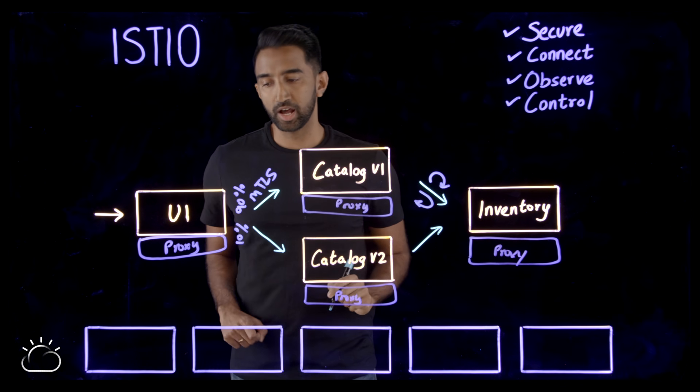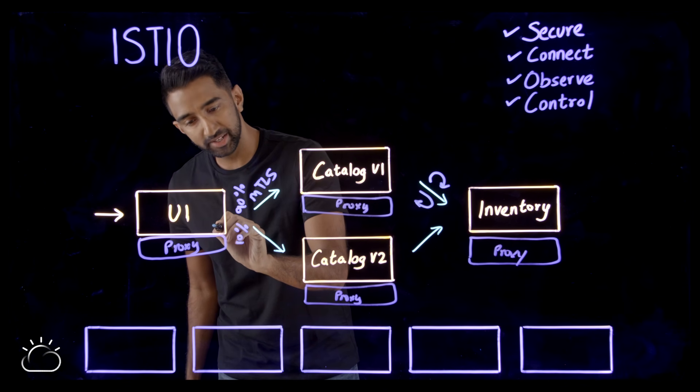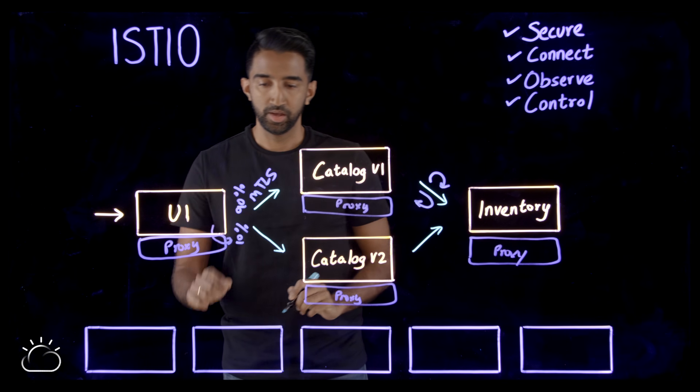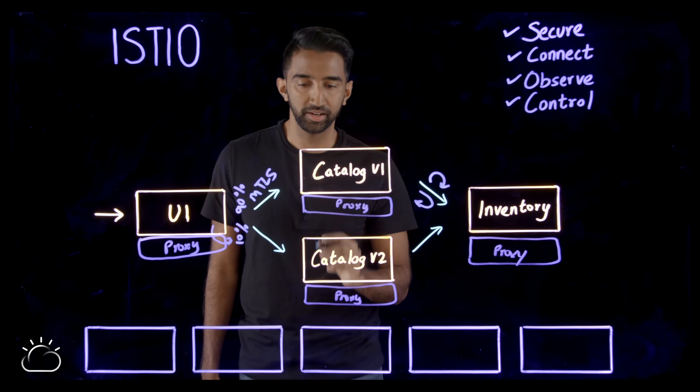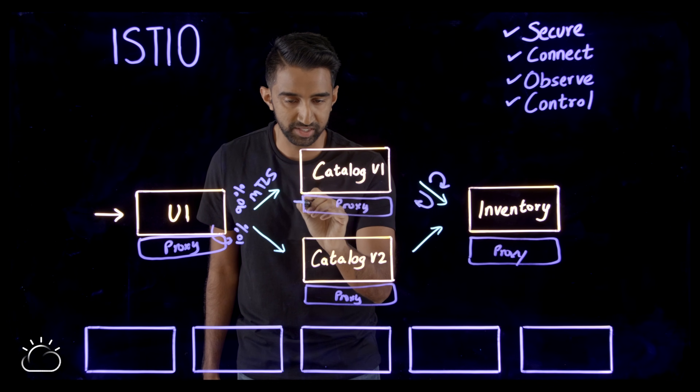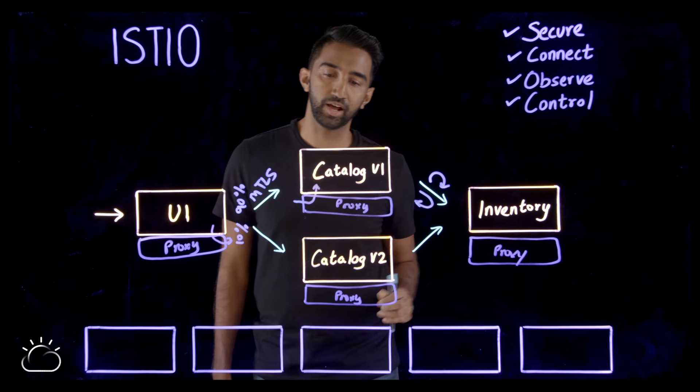Now when UI wants to talk to catalog, the proxy will actually intercept that request, apply any policies and then route traffic to the proxy on the other side. And then the catalog proxy will receive that request and then forward it down to the catalog.